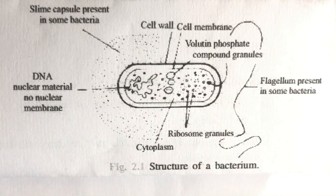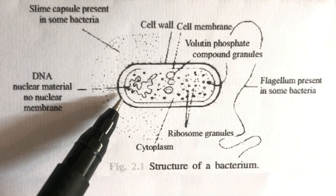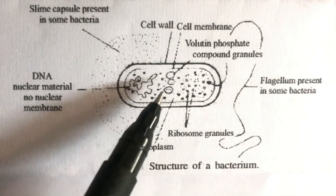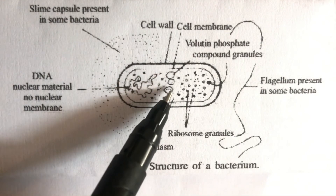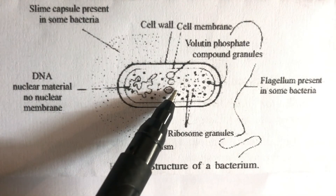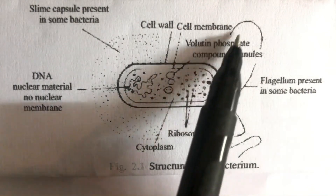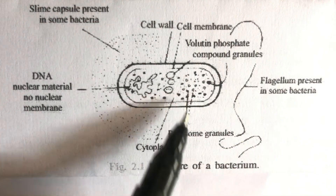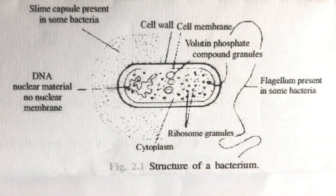This diagram shows the structure of a bacterium. The outermost layer is the cell wall, which is dead. Inner to this is the plasma membrane, which is living. This is the double helical structure of the DNA. There are small granules which are volutin phosphate compound granules. The dots represent the cytoplasm. The flagellum is the whip-like structure that helps in motion. Small granules known as ribosome granules are also present.